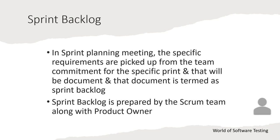The sprint backlog is prepared by the scrum team during the sprint planning meeting and contains the list of product backlog items the scrum team has selected to deliver in the upcoming sprint. It also includes the plan for delivering those items and a sprint goal summarizing the purpose of the sprint. Basically, the sprint backlog states why to develop, what to develop, and how to develop.